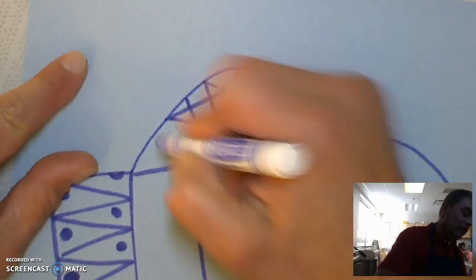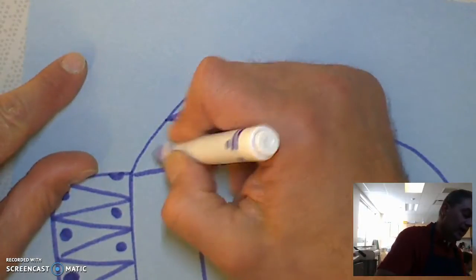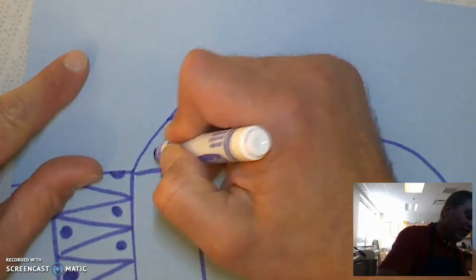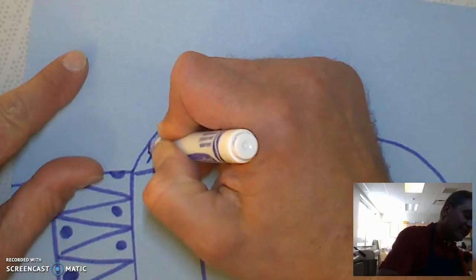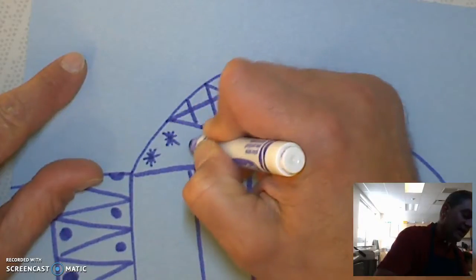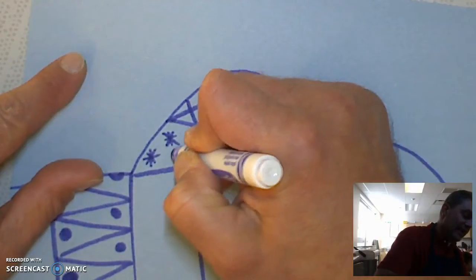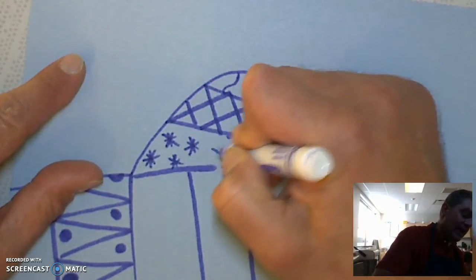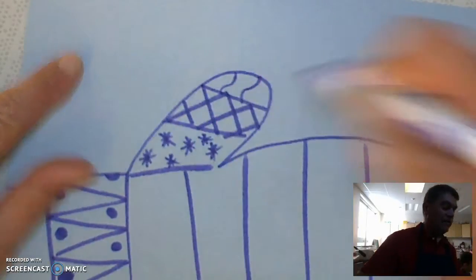And then maybe in this one I'll make snowflakes by making an X with a plus sign, X with a plus sign, X with a plus sign, X plus sign, X plus sign, X plus sign.